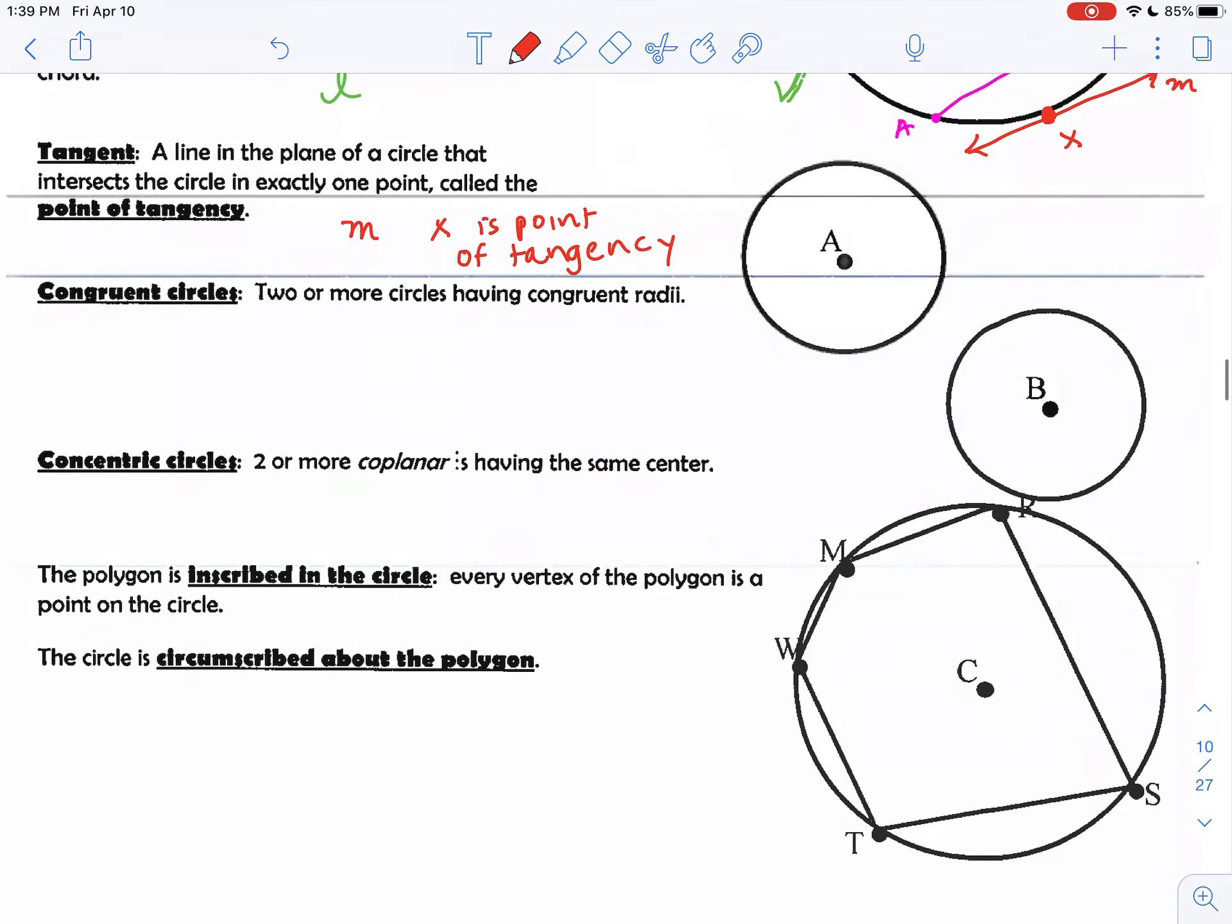We would define two congruent circles as two circles, say circle A and circle B, in which the radius values are the same. I'm going to define this radius to be length 3. If I know that radius is 3 and this radius is 3, I would say circle A is congruent to circle B because both radii are congruent.